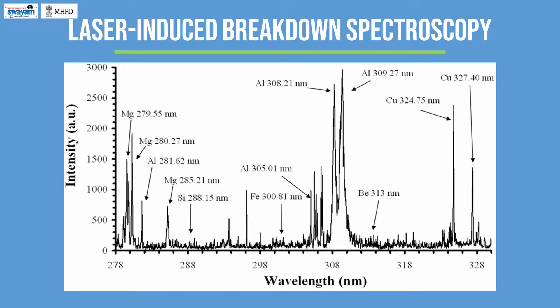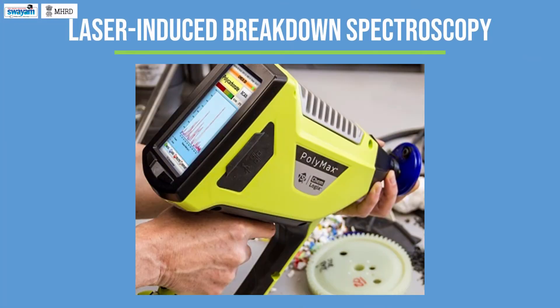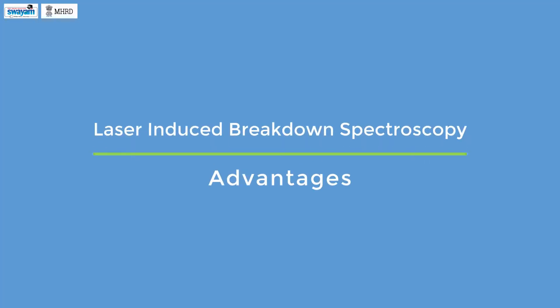A LIBS spectrometer gives a two-dimensional graph or plot which depicts the variation of emitted light intensity with respect to different wavelengths, typically from 170 nm to 1100 nm. This is a portable LIBS instrument which can be taken anywhere for analyzing samples. This is extremely useful for analyzing biomass materials because we need not cut or damage the plants and trees — this is one of the advantages of LIBS.